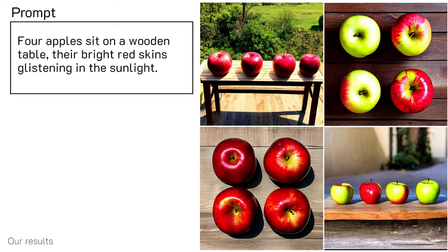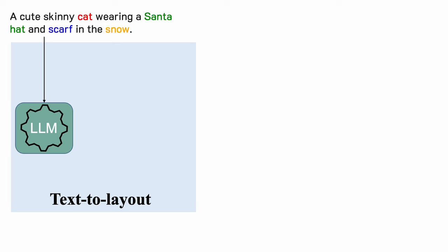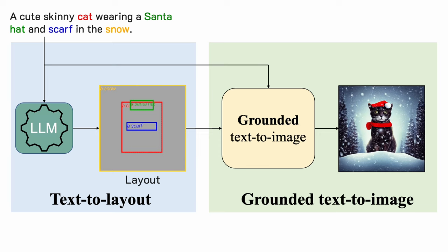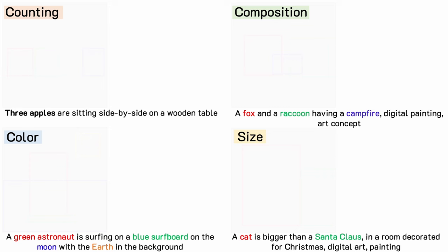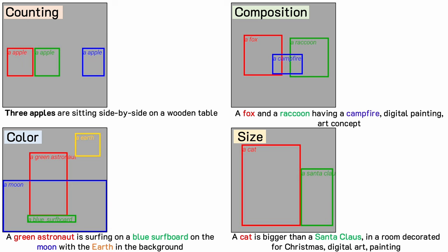Our main idea is to leverage a large language model to generate a spatial layout, and use the layout to guide the image generation. However, it's not that easy. Let's look at several examples testing the capability of counting, spatial composition, color, and relative object sizes. Large language models like ChatGPT or Llama 2 can produce plausible spatial layouts from the text prompt.